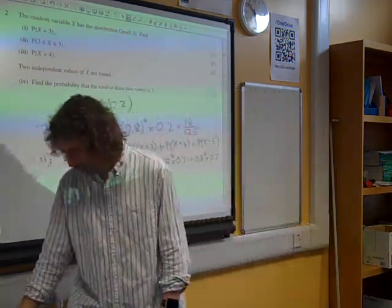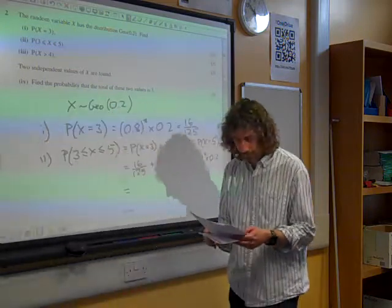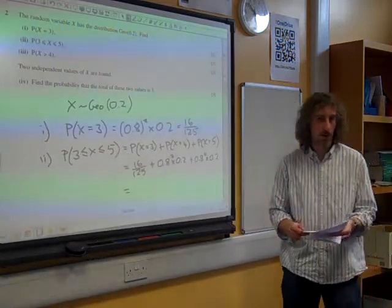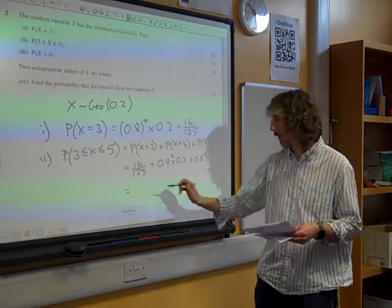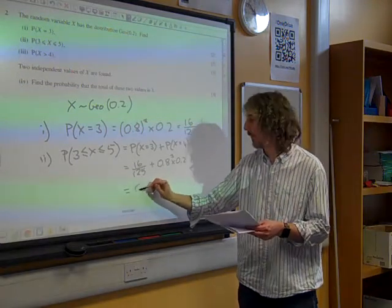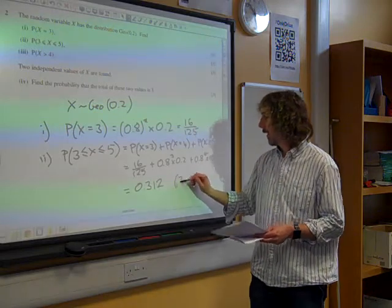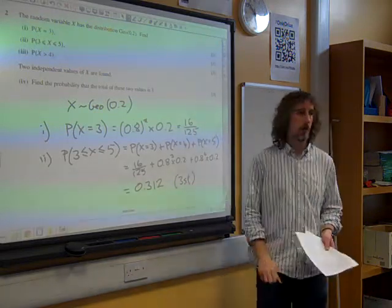And if we work out those individual probabilities, it gives us... Did you get 0.312? Yeah, 976 over 3125. But we'll do it to three significant figures. That's 0.312. Very good.